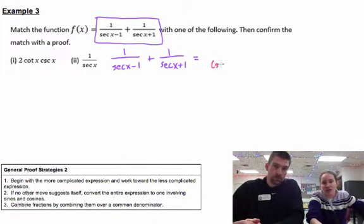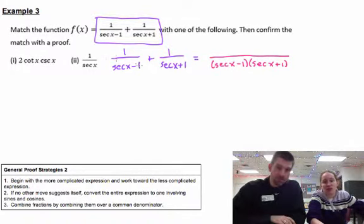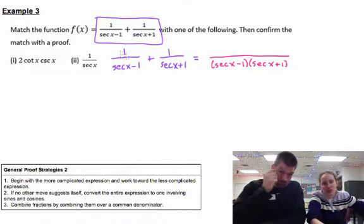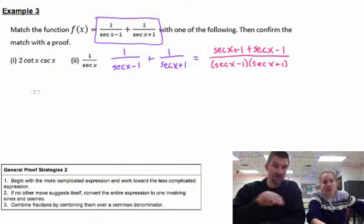I want to get a common denominator too, it's the way to go. So we need our common denominator to have secant x minus one times secant x plus one. I feel like that's going to end up being something. It will, good eye. So to finish this off, this first fraction needs secant x plus one, right? The second fraction needs secant x minus one.